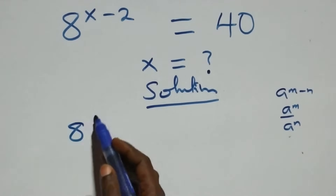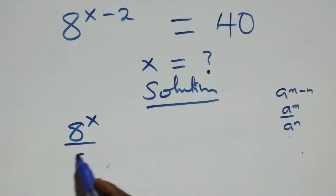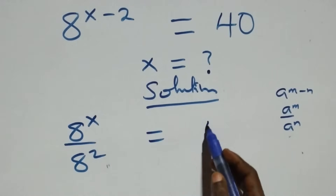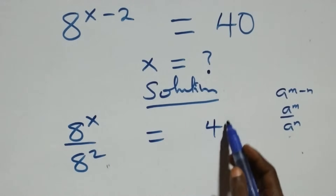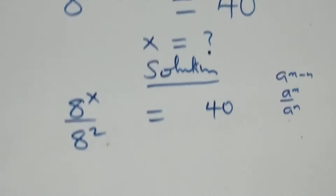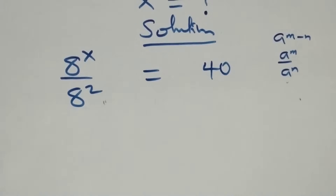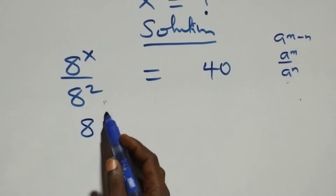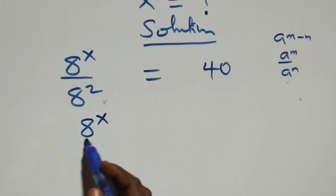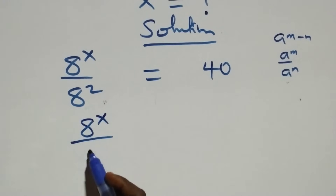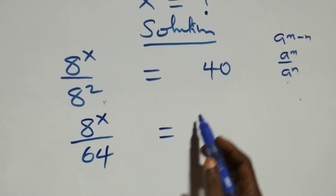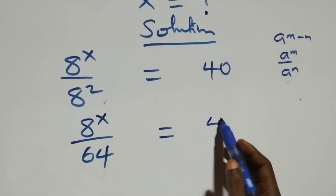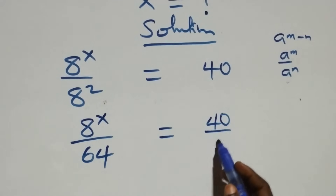So we have 8 raised to power x over 8 squared equals 40. Since 8 squared is 64, this becomes 8 raised to power x over 64, which equals 40 over 1.